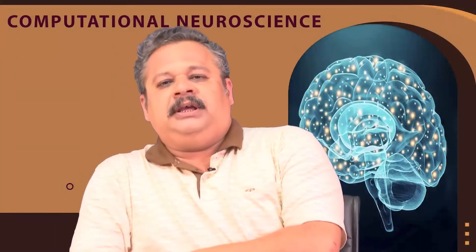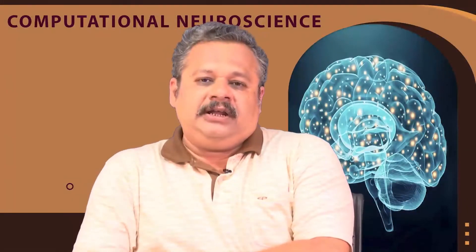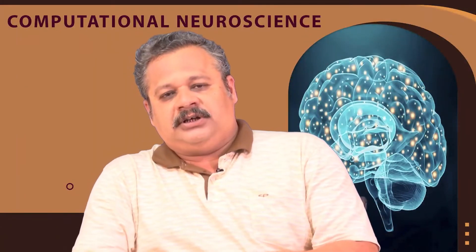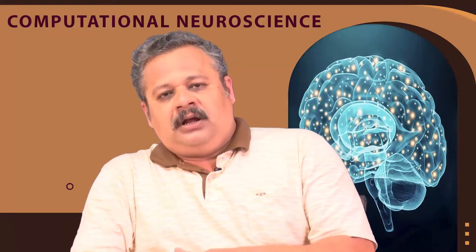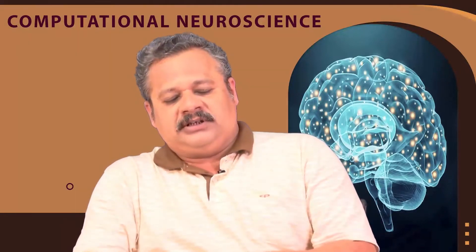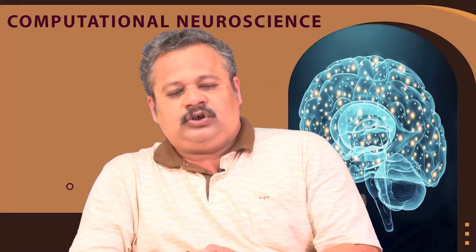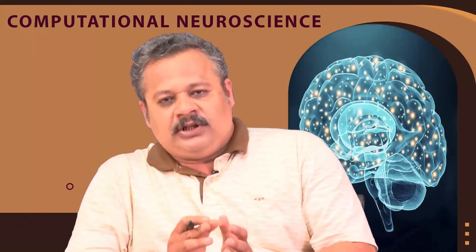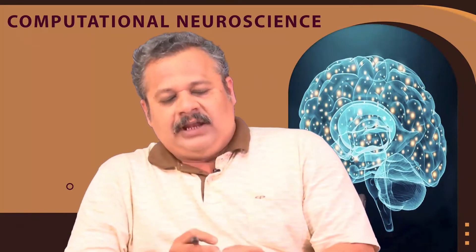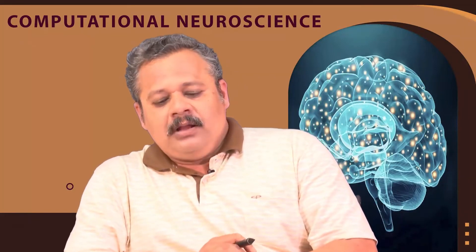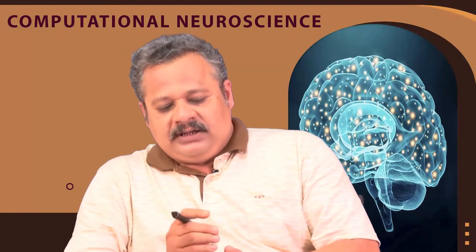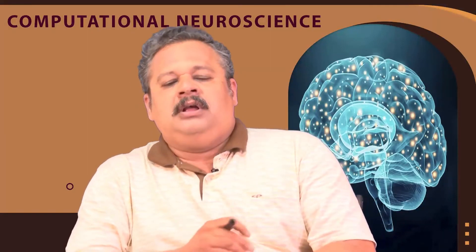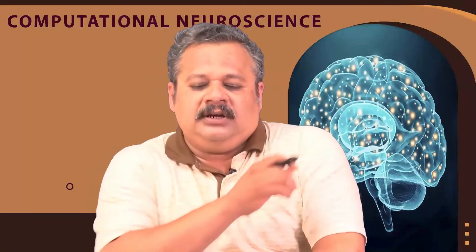With that, we discussed the fidelity of coding by neurons based on this Fisher information, which is a function of the stimulus. The Fisher information shows how the discrimination performance would be near a given value of S, or the stimulus — that is, if we change S by a very small amount, how well can we discriminate.